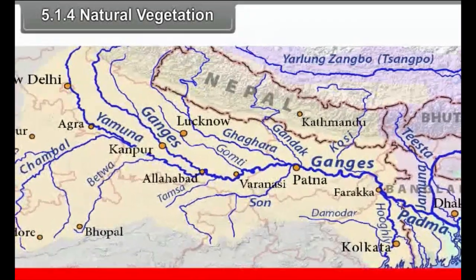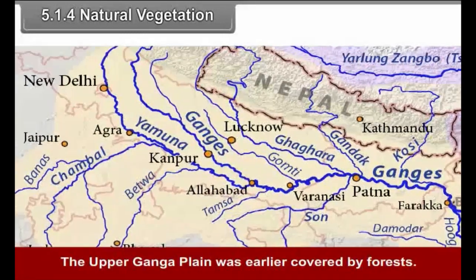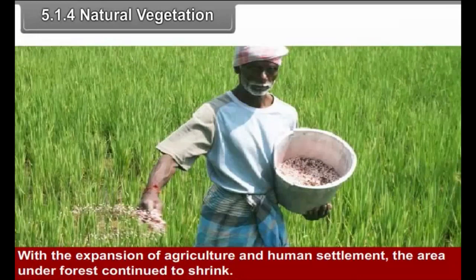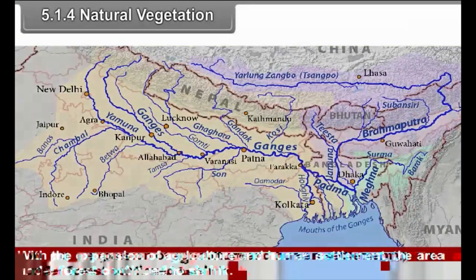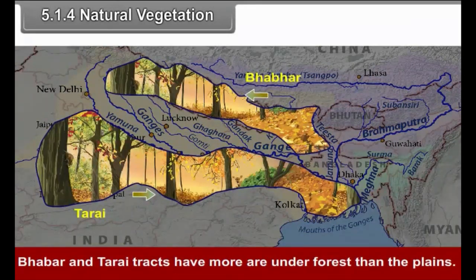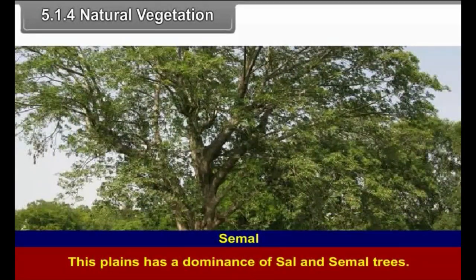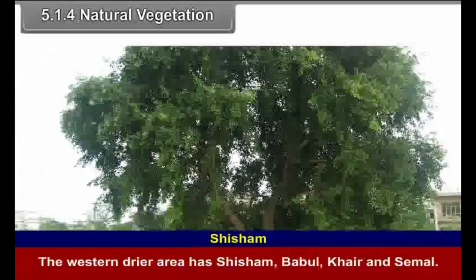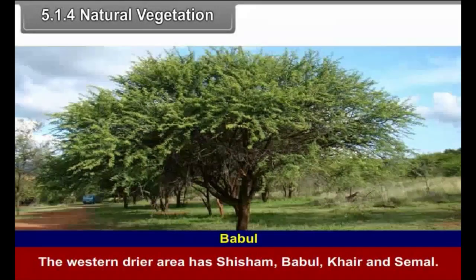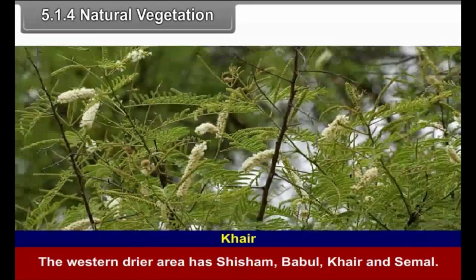5.1.4 Natural Vegetation. The upper Ganga Plain was earlier covered by forest. With the expansion of agriculture and human settlement, the area under forest continued to shrink. Bhabar and Tarai tracts have more area under forest than the plains. This plain has a dominance of sal and simul trees. The western part has shisham, babul, kher and simul.